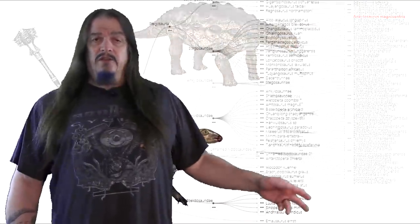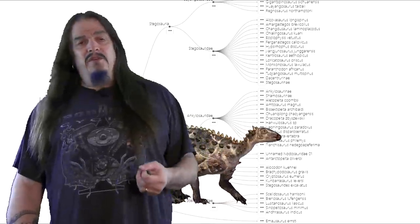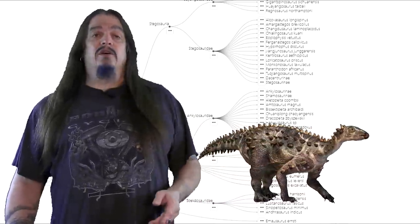Astegosaurs are from the late Jurassic, Ankylosaurs are Cretaceous, but both have an obvious common ancestor that was already around at the time that we're talking about.